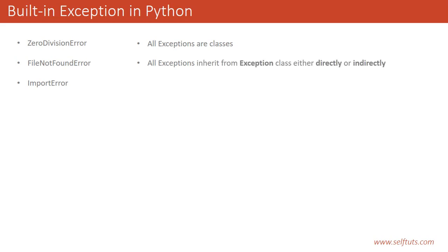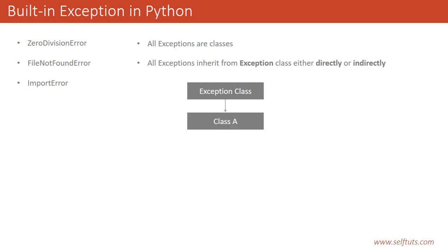All exceptions inherit from the Exception class either directly or indirectly. Every exception present inside Python, or every exception you will create later on, will inherit from the Exception class. If you are creating your own exception class, say class A, it has to inherit from the Exception class, otherwise class A will not be treated as an exception class.